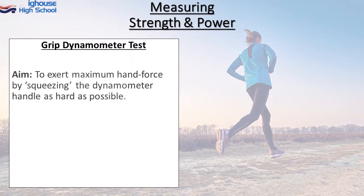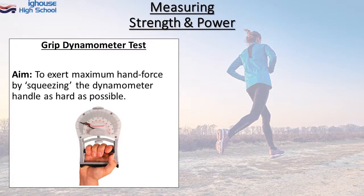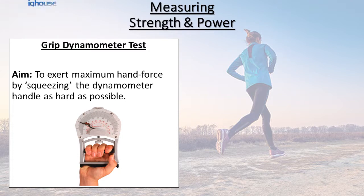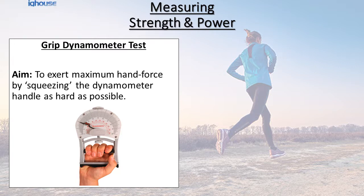Strength is measured using the grip dynamometer test. This works by exerting maximum hand force onto the instrument by squeezing it as hard as possible. The harder you squeeze, the higher your result, and the higher the result hopefully indicates you've got a higher level of strength.